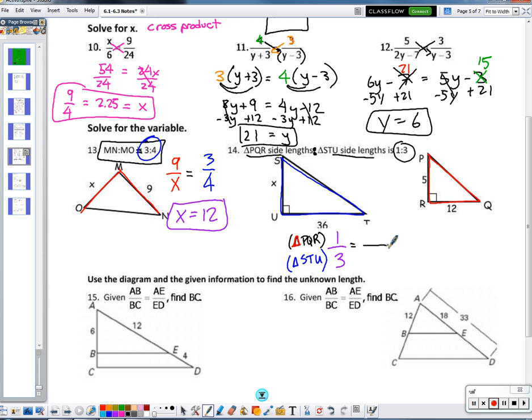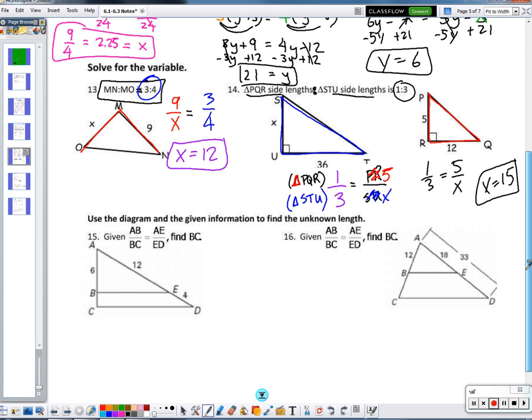So, what side is my variable on? Which side is my variable on? Which triangle? STU. And what side is that? SU. So, I'm going to set 1/3 equal to SU. Which side? SU, top or bottom? Bottom. STU, bottom. SU, I want to set that in a ratio with its corresponding side. So, SU matches with what side on the other triangle? PR. So, what's the length of PR? 5. This is 5. What's the length of SU? X. So, 1/3 equals 5/X.